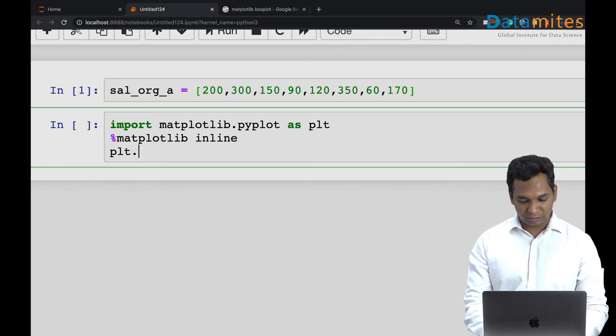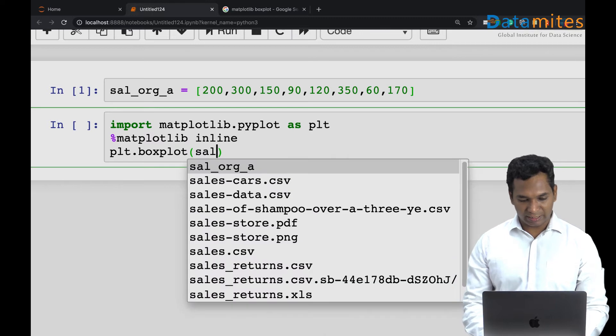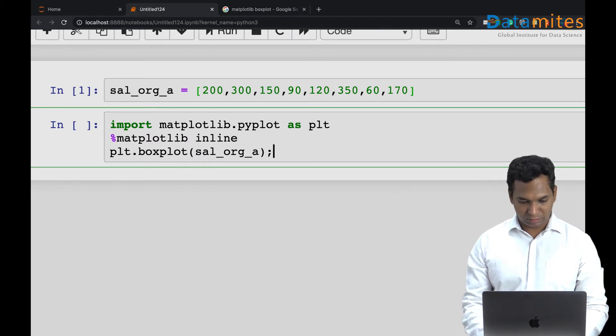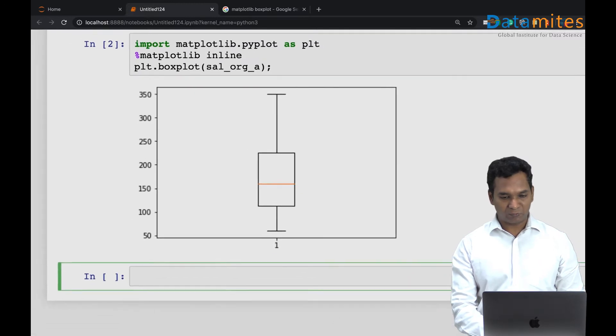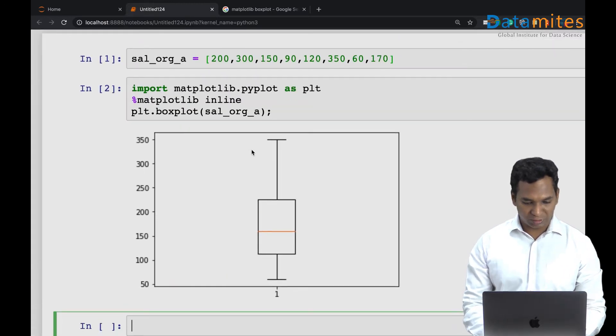It's plt.boxplot. I'll say sal_org_a. So this is your box plot and what does it show?